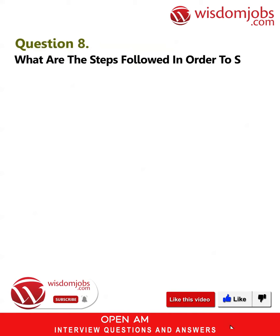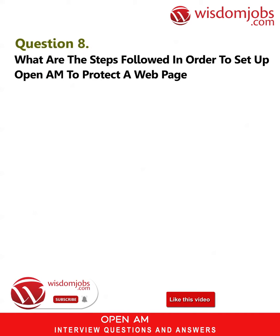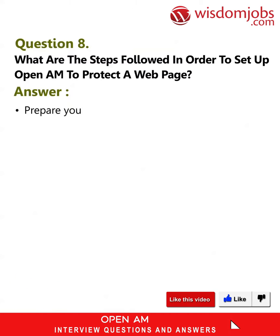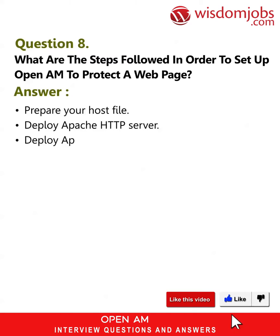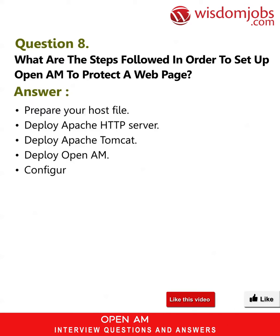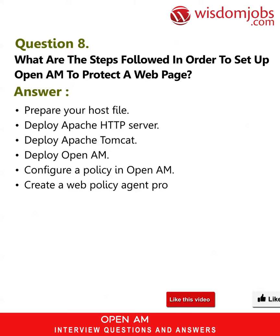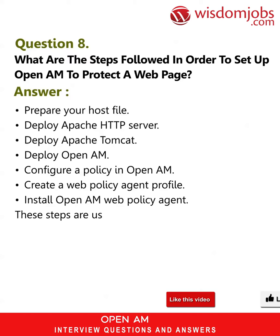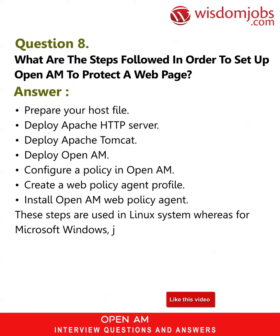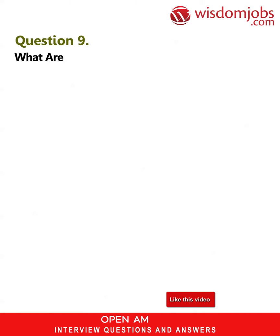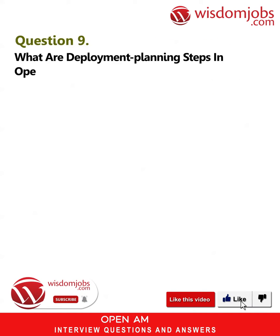Question 8: What are the steps followed to set up OpenAM to protect a web page? Answer: Prepare your hosts file, deploy Apache HTTP Server, deploy Apache Tomcat, deploy OpenAM, configure a policy in OpenAM, create a web policy agent profile, and install the OpenAM web policy agent. These steps are used in a Linux system, whereas for Microsoft Windows, just adapt the examples accordingly.